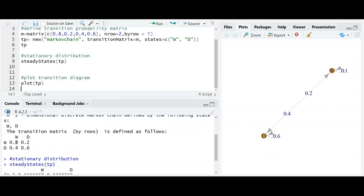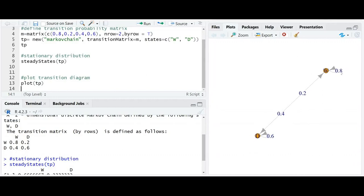So here we have, we can compare the matrix. For wet day to wet day it was 0.8. If we bring it here, for wet day to wet day it is 0.8, for wet day to dry day it was 0.2. So here it is 0.2 from wet day to dry day. For dry day to wet day it was 0.4. So dry day to wet day is 0.4 and for dry day to dry day it was 0.6.